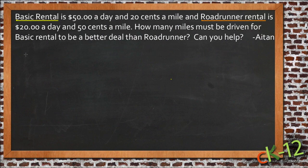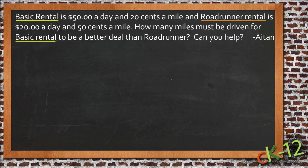What we want to do is look at the cost over miles — over distance — for Basic Rental versus Roadrunner Rental. What we're looking for is where their prices are the same. Because anywhere past that point, Basic Rental will start getting cheaper. Before that happens, Roadrunner Rental is cheaper, because Basic Rental's price per mile goes up more slowly, while Roadrunner's goes up more quickly but starts cheaper. So we'll write out an equation for each and then compare them.